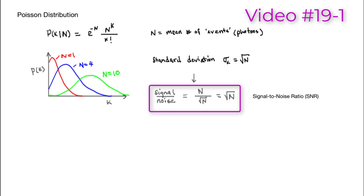In other words, as you had fewer photons, the noise got worse by the square root of that value. Maybe when you saw that it looked a bit theoretical, but here we're going to see the practical application of this.